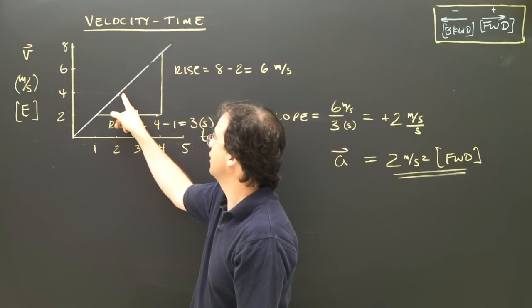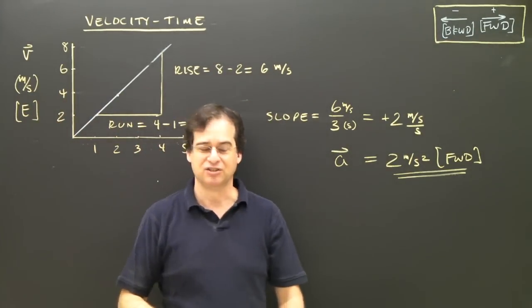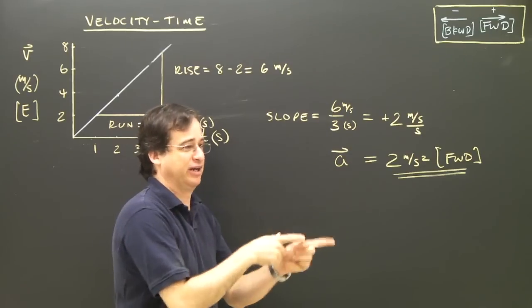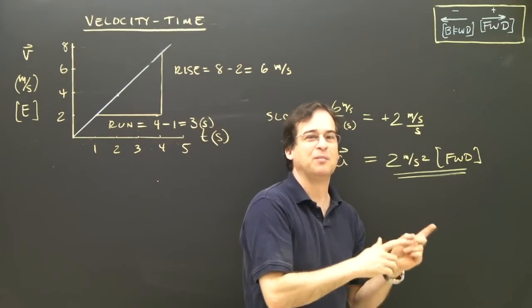At 2 seconds, I go up here and I go across, and I'm going 4 meters per second. Positive, so it's east. So I wasn't moving, I'm running 2 meters per second that way. Then I'm running 4 meters per second that way. I must be speeding up.